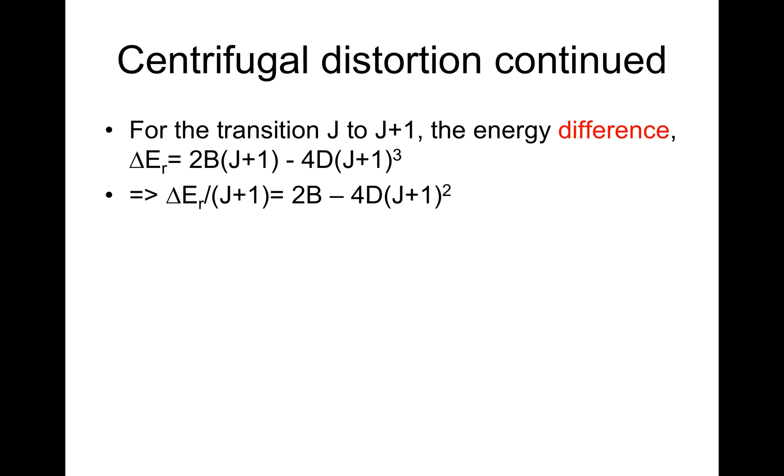That implies delta E_R/(J+1) is equal to 2B minus 4D*(J+1)^2.